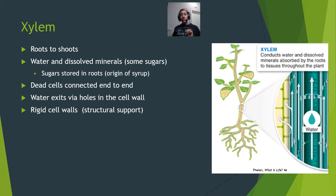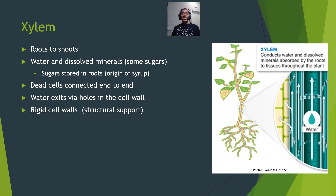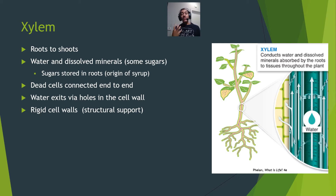Xylem can also transport sugars. For example, maple trees store sugars in their roots during winter months so they can feed off those sugars when winter passes and they need to make new leaves. That's where maple syrup comes from — people tap trees early in spring to collect the sugary sap being brought up from the roots, which is then boiled down.